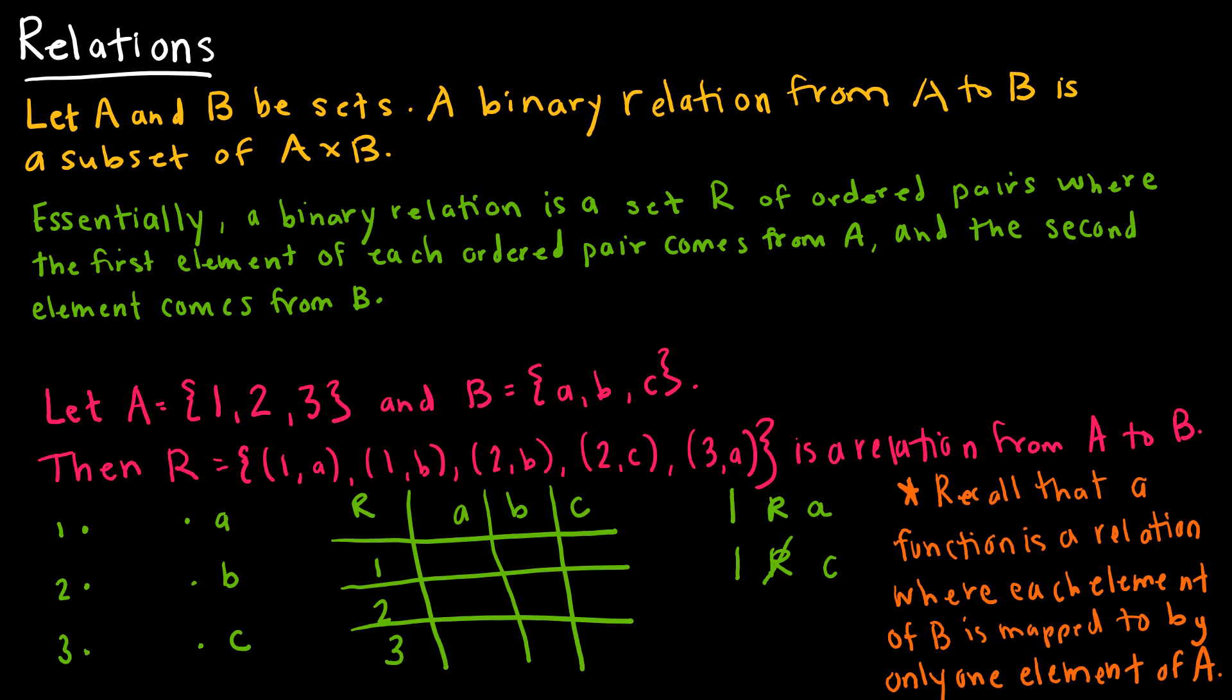A relation on a set, or a relation from one set to another, in this case A to B, is essentially a subset of A times B. Essentially what we're saying is we're going to have ordered pairs where the first value comes from set A and the second value comes from set B.